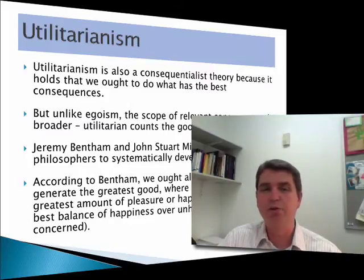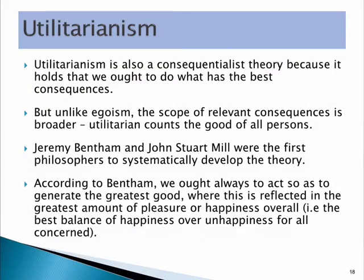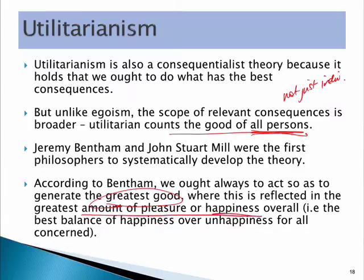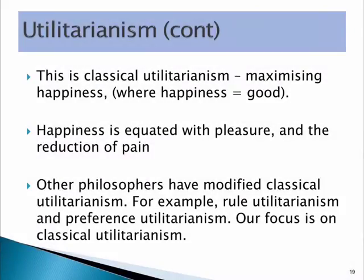Bentham and Mill were well-known moral philosophers who expanded this approach. The key elements are that it looks at the good of everyone, not just the individual doing the act, which would of course be ethical egoism. An ethical act is one where we create the greatest good — the greatest amount of pleasure or happiness overall, the best balance of happiness over unhappiness for everyone, for all the stakeholders. While some philosophers have extended classical utilitarianism, we'll concentrate on the classical approach, which is about maximizing happiness or good, taken to mean pleasure or the reduction of pain.